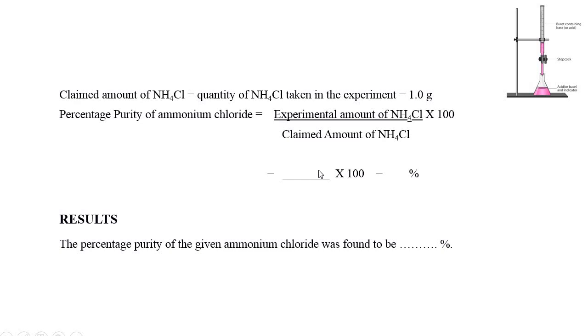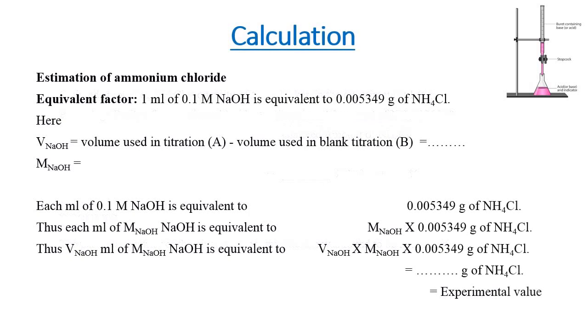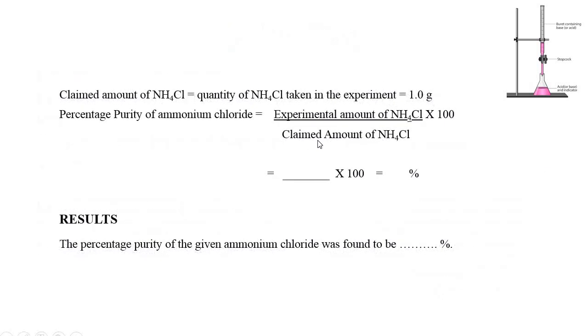The experimental value we can get from this calculation using the weight given here. Then we can divide it by the claimed amount, that is 1 gram, times 100. Here we can get the percent purity value and this percent purity value is written in the result: the percent purity of the given ammonium chloride was found to be this.